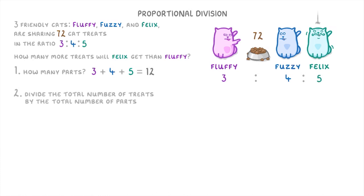Next, we need to divide the total number of treats by the total number of parts, to find out how much each part represents. So we take the 72 treats and divide it by 12, showing that each part is worth 6 treats.